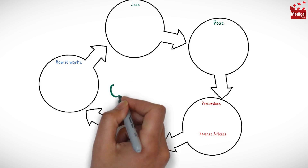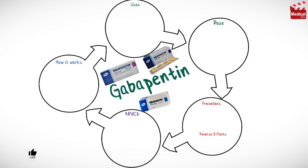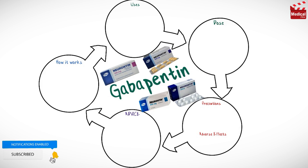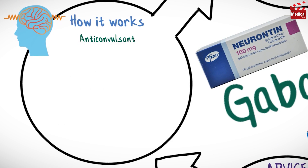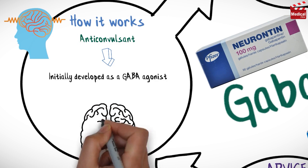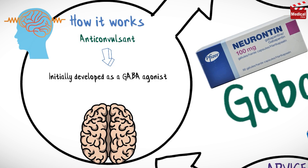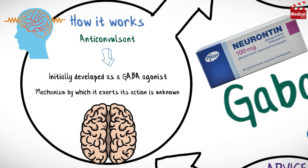In this video we'll briefly discuss what gabapentin is and how it works, what it's used for, the dose, side effects, contraindications, and precautions. Gabapentin is an anticonvulsant. It was initially developed as a gamma-aminobutyric acid agonist; however, the mechanism by which gabapentin exerts its action is unknown.